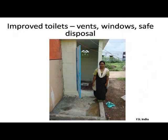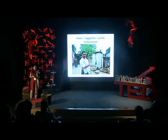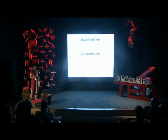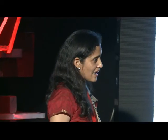The Government of India said, okay, we need an improved model. And they came out with a new improved sanitation model where there were vents to take away the odour, windows, and safe disposal. Water and sanitation were jointly implemented so that you could have water to clean the toilets. But usage crept up only very slowly. So you peel another layer and find that there's really no demand for toilets.